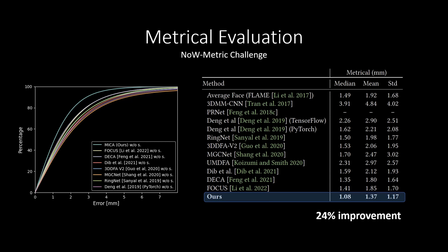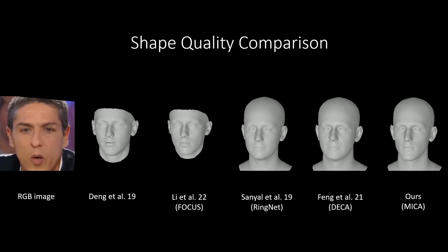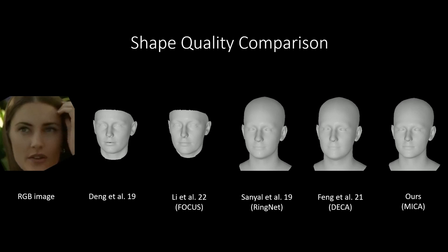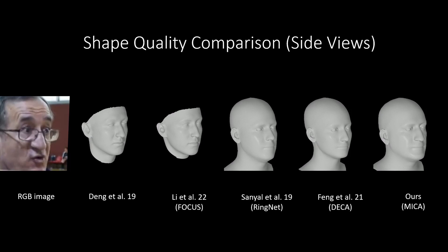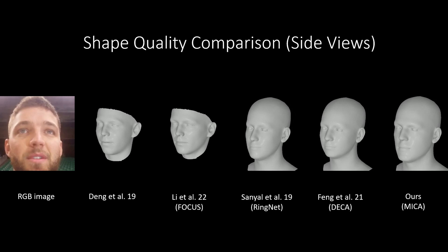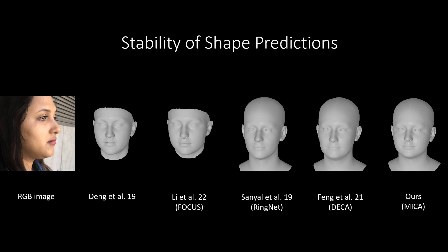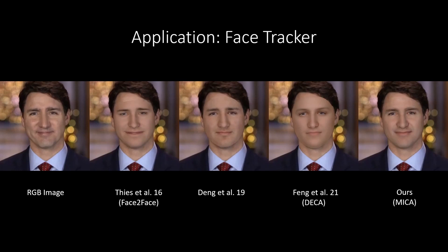An interesting observation is that the FLAME average model performs better than most other methods. Here we show some qualitative comparison of our method to state-of-the-art methods. Our method is robust to facial occlusions, pose and expression changes. Looking at the side views of reconstructions, we can observe that our method can better recover face parts like the jaw or nose, together with the overall head shape. It is essential to have consistent results for the same subject across multiple images, and our method achieves low variance compared to other methods while producing metrical reconstructions.